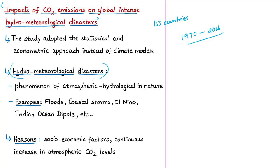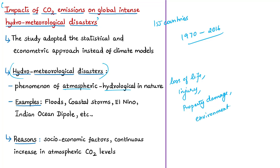A hydrometeorological disaster or hazard is a process or phenomenon of atmospheric, hydrological, or oceanographic nature that may cause loss of life, injury, or other health impacts, as well as property damage, loss of services, social and economic disruption, and environmental damage. Examples of hydrometeorological disasters include floods, coastal storms, El Niño, Indian Ocean Dipole, avalanches, tornadoes, and blizzards. As per the study, the continuous increase in atmospheric carbon dioxide concentration during the past four decades is significantly correlated with the increase in the number of extreme flood and storm events.